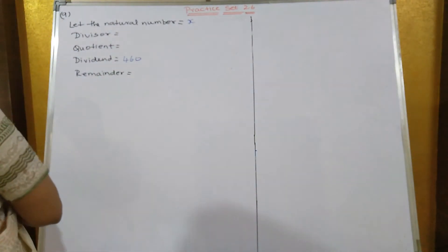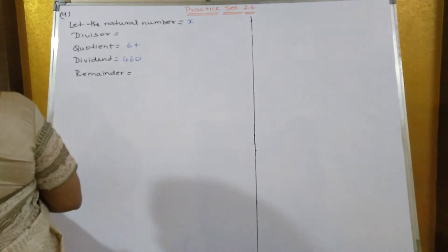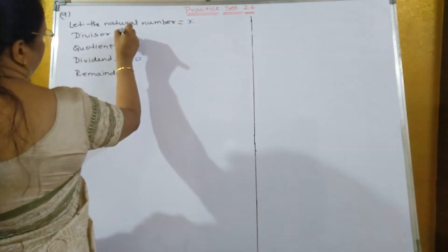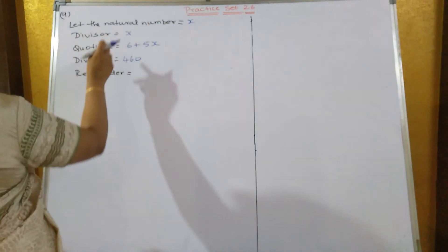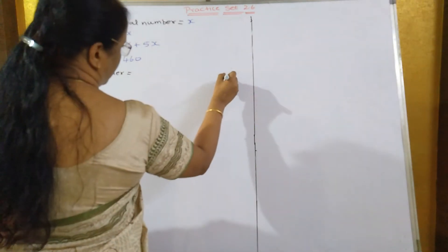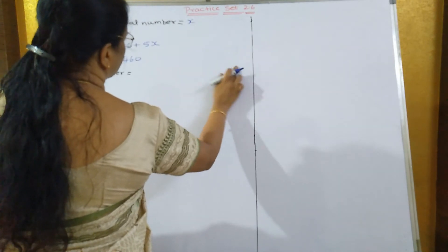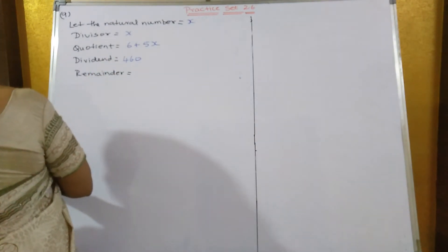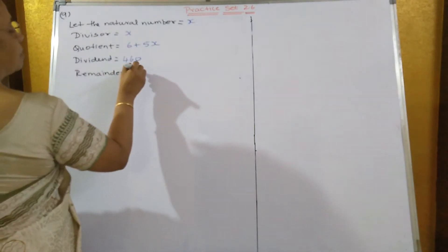Quotient is 6 more than 5 times the divisor. Over here divisor is x. I think you must have understood this is dividend, divisor is this. Dividend is equal to 460 and quotient they have given is 6 more than 5 times the divisor and remainder they have given 1.